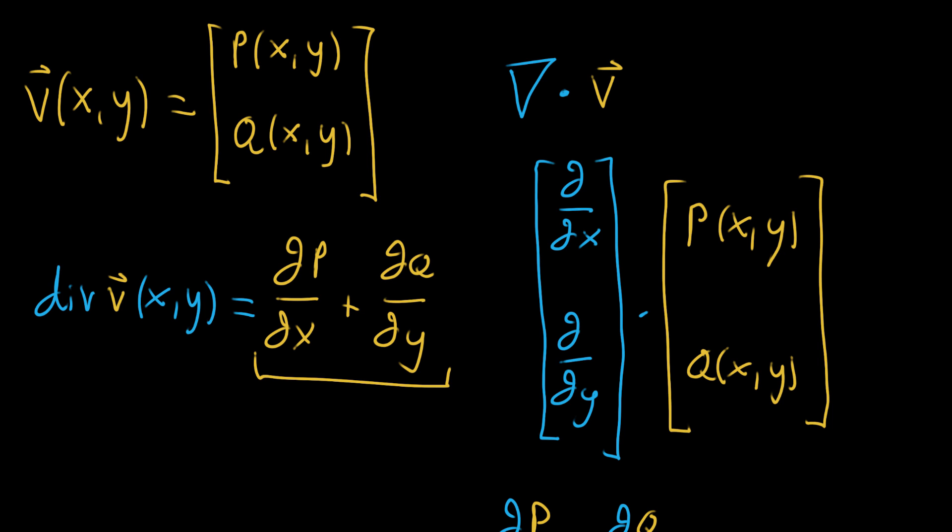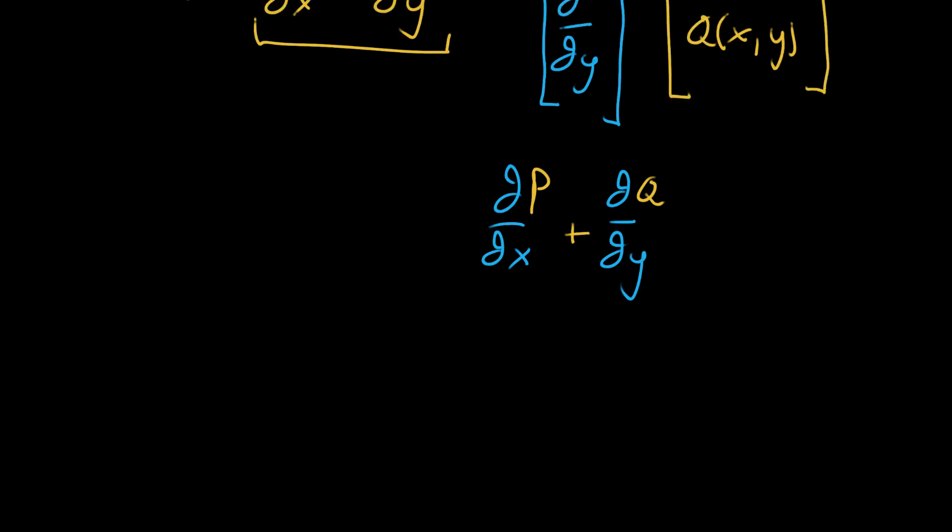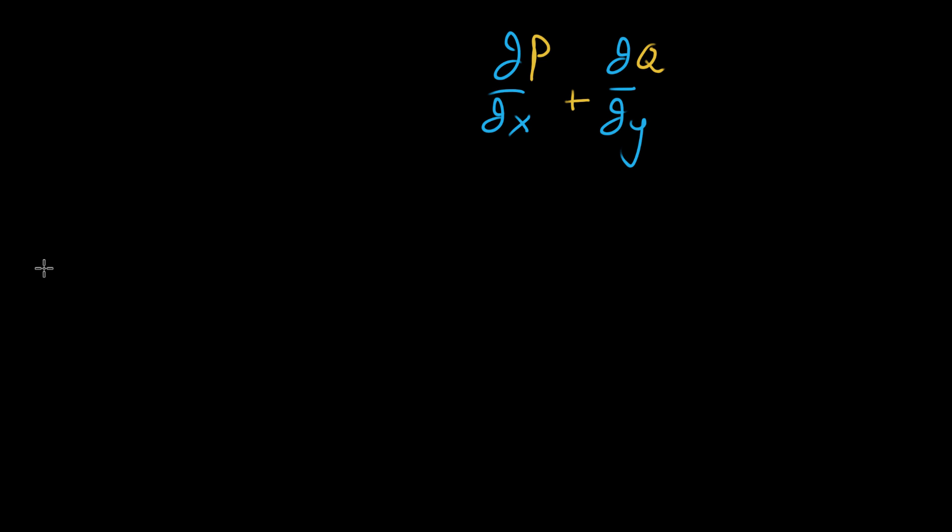But another nice thing, this can apply to higher dimensional functions as well. If we have something that's a vector-valued function, it's gonna be a three-dimensional vector field. So it's got x, y, and z as its inputs, and its output then also has to have three dimensions.